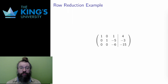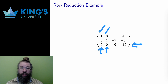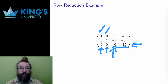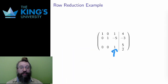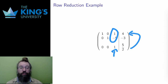Now I have this matrix. There are leading ones in the first and second rows, and both their columns are finished — everything else in those columns is zero. Now I want a leading one in the third row. To get this, I divide the third row by negative six, which produces a one in the third entry and five over two in the fourth entry. I need to make the other entries in its column zero. To get rid of the one in the first row, I subtract the third row from the first row. The first two entries don't change, the third entry becomes one minus one equals zero, and the fourth entry becomes four minus five over two, which is three over two.